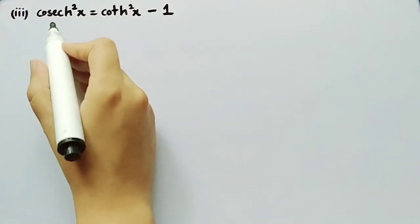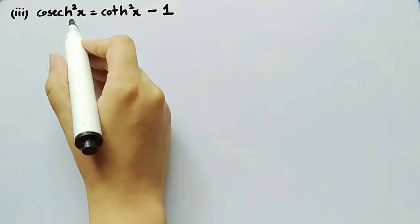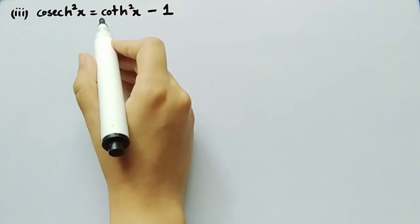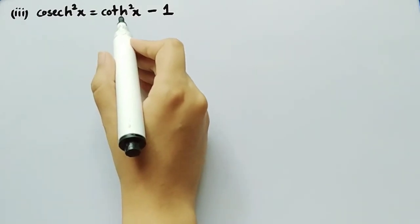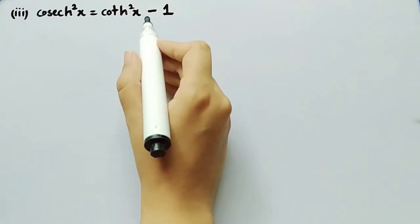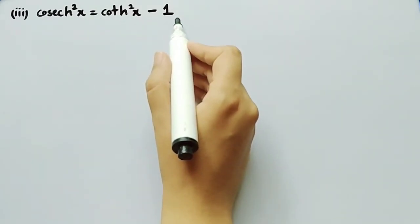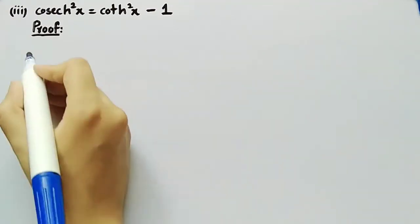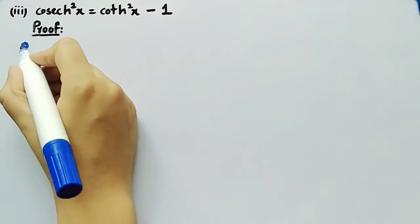In this video, we will prove the identity that cosecant hyperbolic square x is equal to cot hyperbolic square x minus 1. Coming towards its proof, we will firstly take the right hand side.